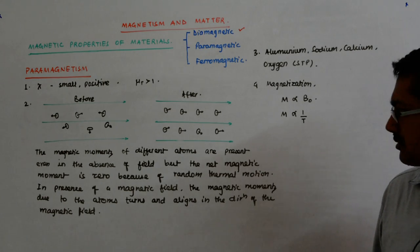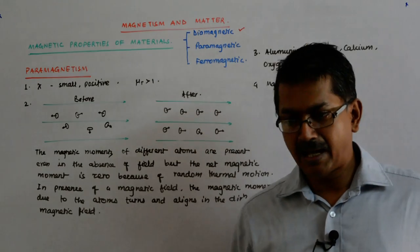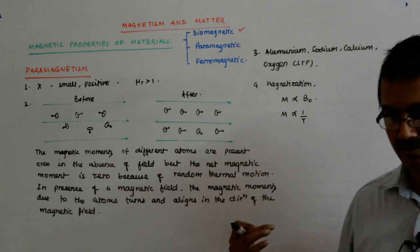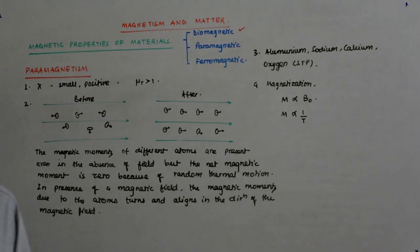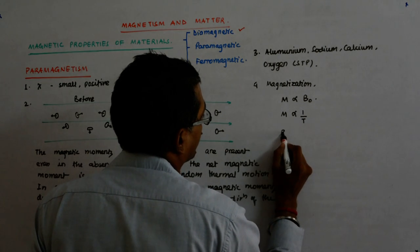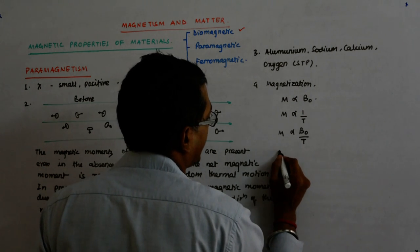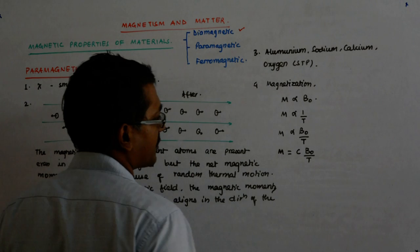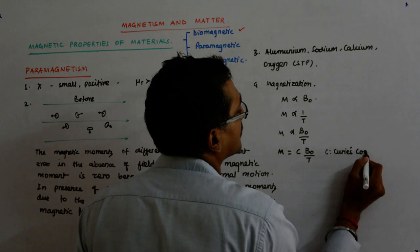What do we mean by random thermal motion? Thermal motion is — even from the ambient temperature — the material keeps on taking heat energy and that induces this thermal motion. That happens with electrons of conductors as well. So M is directly proportional to B0 upon T. And when the proportionality constant comes in, I have a constant C which is called Curie's constant.